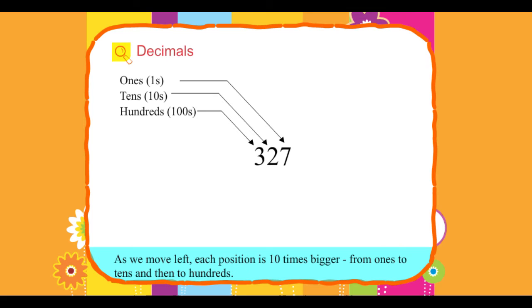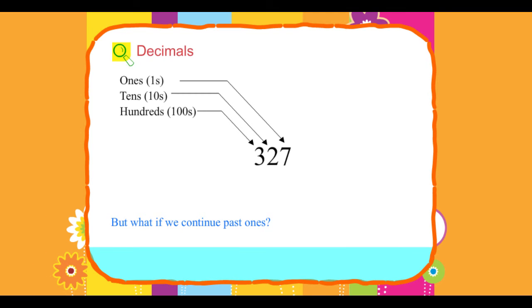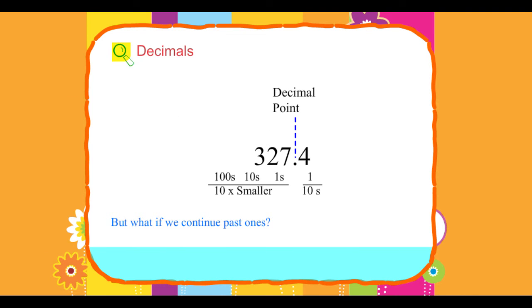As we move left, each position is 10 times bigger from ones to tens to hundreds. But what if we continue past ones? Decimal point: 327.4. As we move right, each position is 10 times smaller from hundreds to tens to ones.